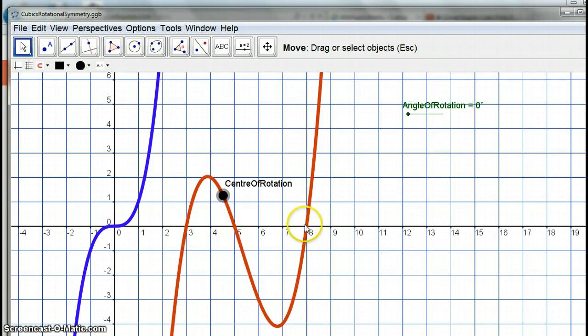this graph here has x-intercepts of 3, 5, and 8, whereas if I move it, I can't move it, this graph here is also a cubic, but it's got an intercept only at 14, for example. But both cubics have something in common.